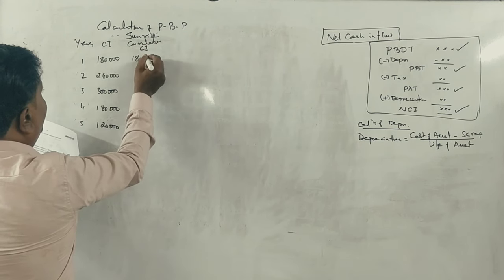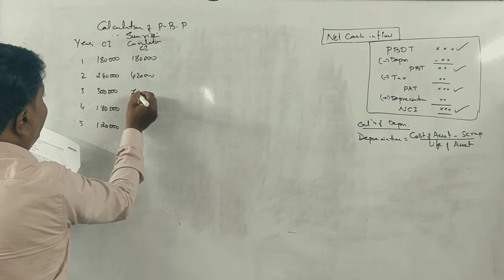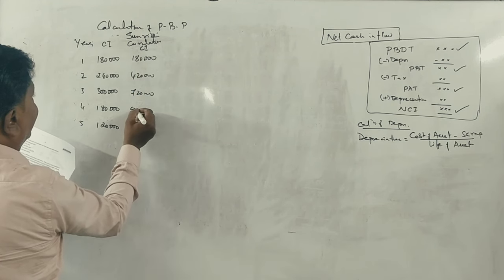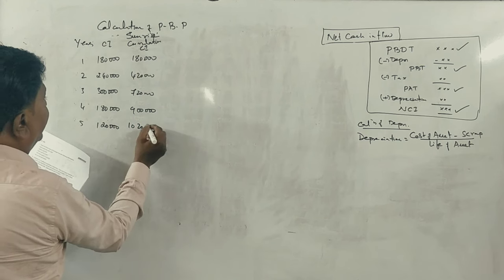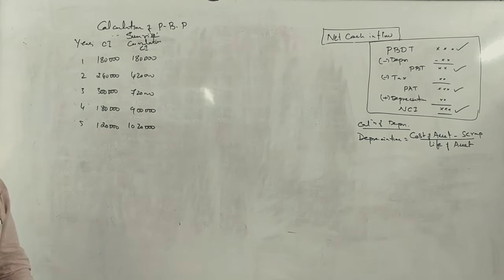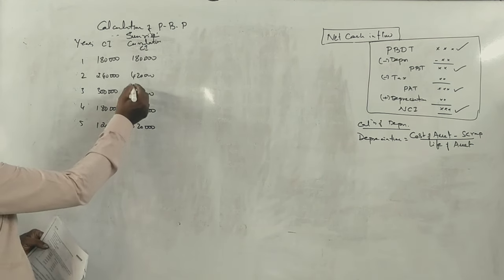1 lakh 80 plus 4 lakh 20 plus 7 lakh 20 plus 9 lakhs plus 10 lakh 20,000. Correct. 6 lakhs. We have 6 lakhs.